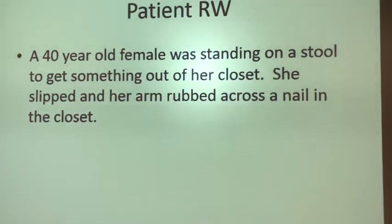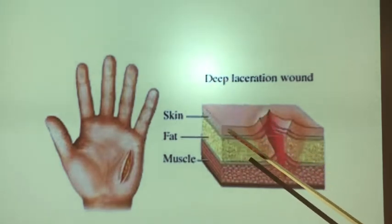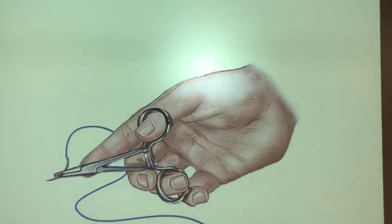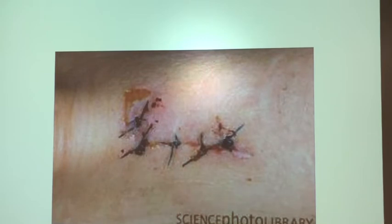Here's something we see quite often in the emergency room. A 40-year-old female standing on a stool slipped and her arm rubbed across a nail in the closet. This is a laceration — something we treat in the emergency room. These are the skin layers: skin, fat, and muscle. When you have a laceration that requires sutures or stitches, that's done at the bedside. After you sew up the laceration, it might look something like this. Depending on the sutures used, they may have to be removed or they'll dissolve on their own.